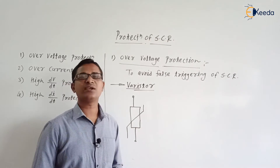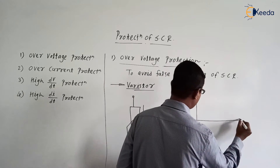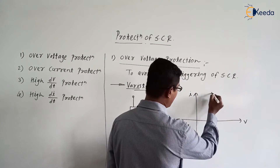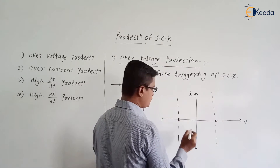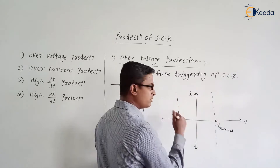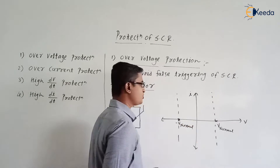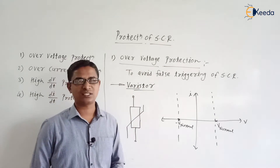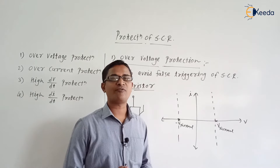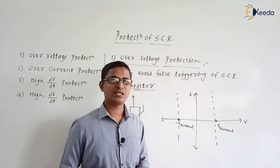A varistor is a device having a voltage versus current characteristic as shown in the figure. During normal working voltages, the resistance offered by the varistor is infinite, meaning the current flowing through the varistor will be zero.